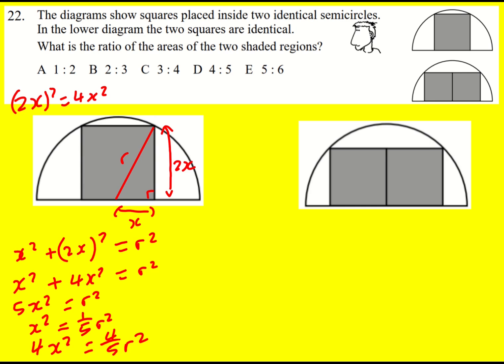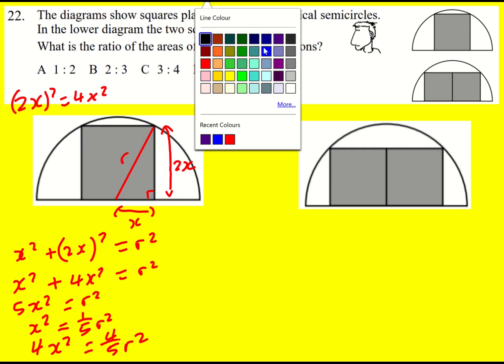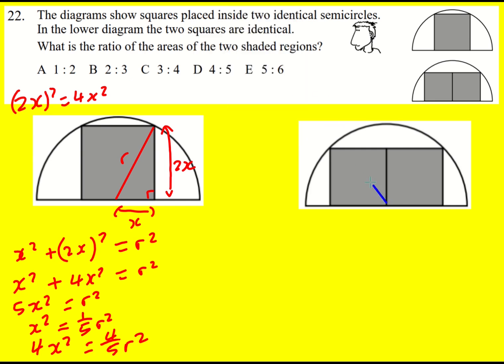Let's do very similar on the right hand side. So now the radius is going to be from this corner to here, and it is exactly the same again. However, the length of the square is not going to be x this time, it's going to be something else. Maybe I call it y, and that length is also y.